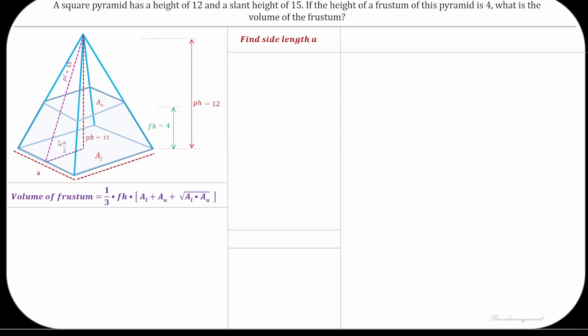As per Pythagoras theorem, the square of hypotenuse side PL is equal to the sum of square of other two sides. Now substitute the value of the slant height and the height of the pyramid and solve for A. The side length of the lower base is 18.